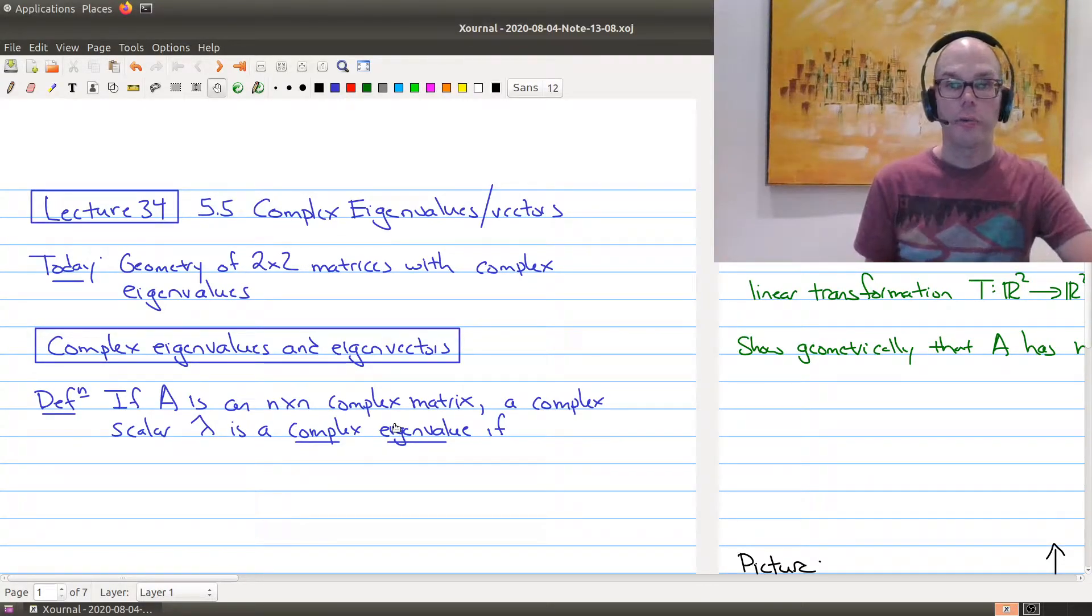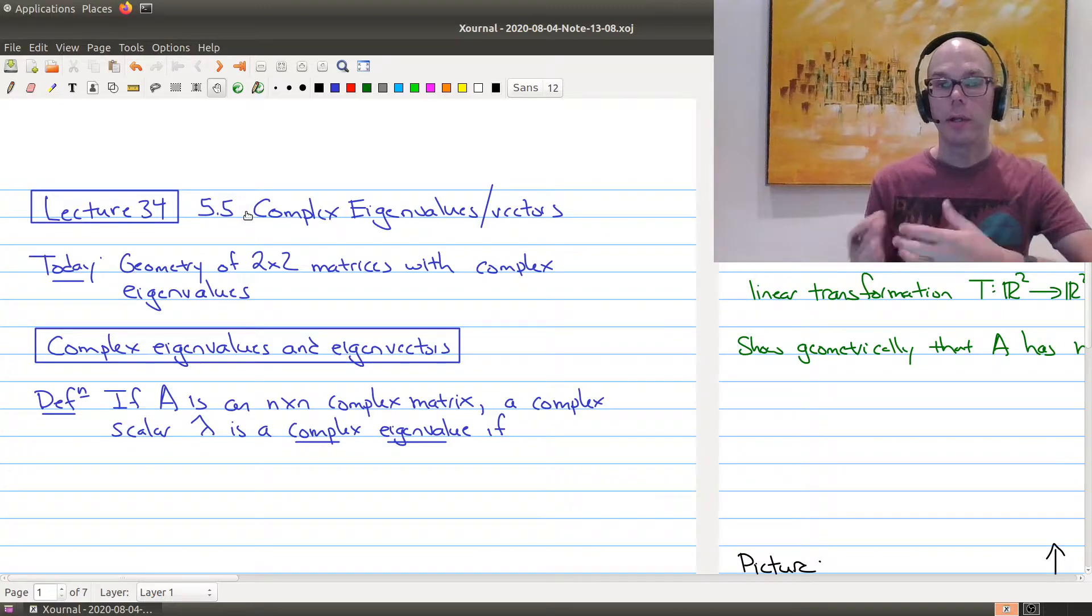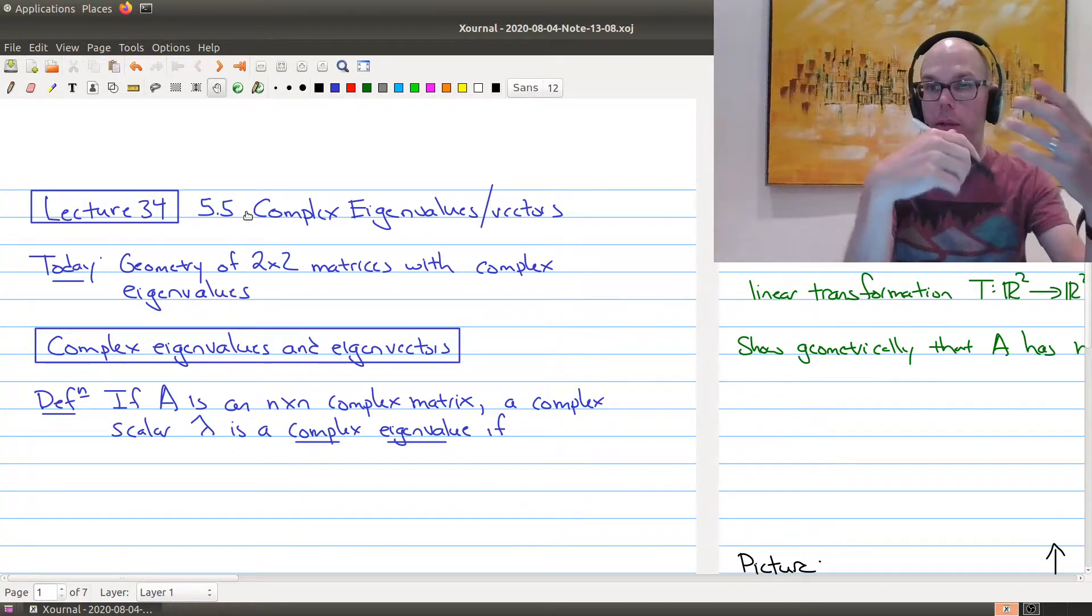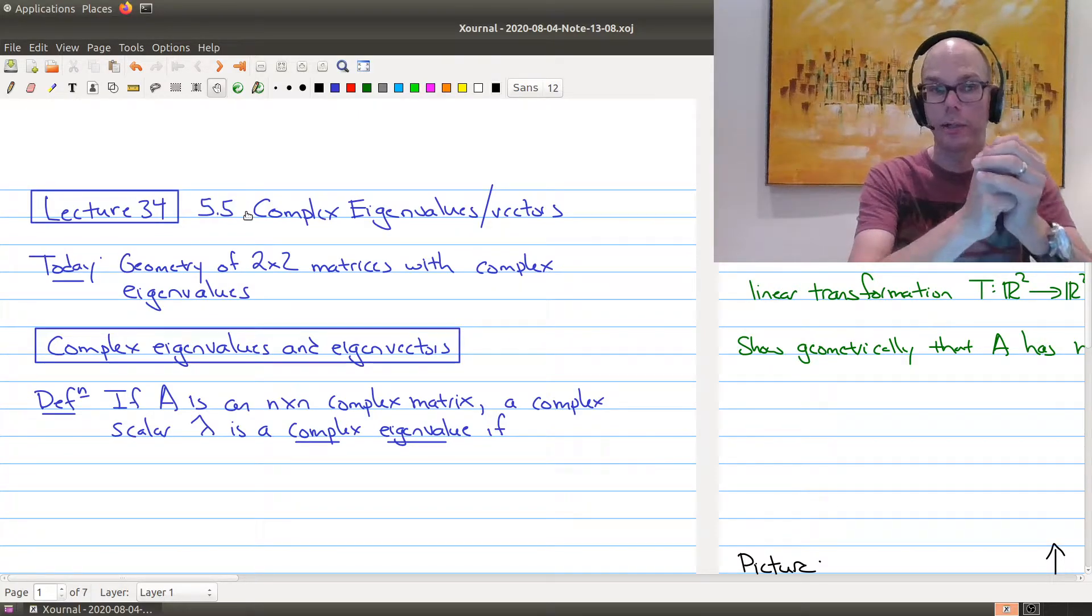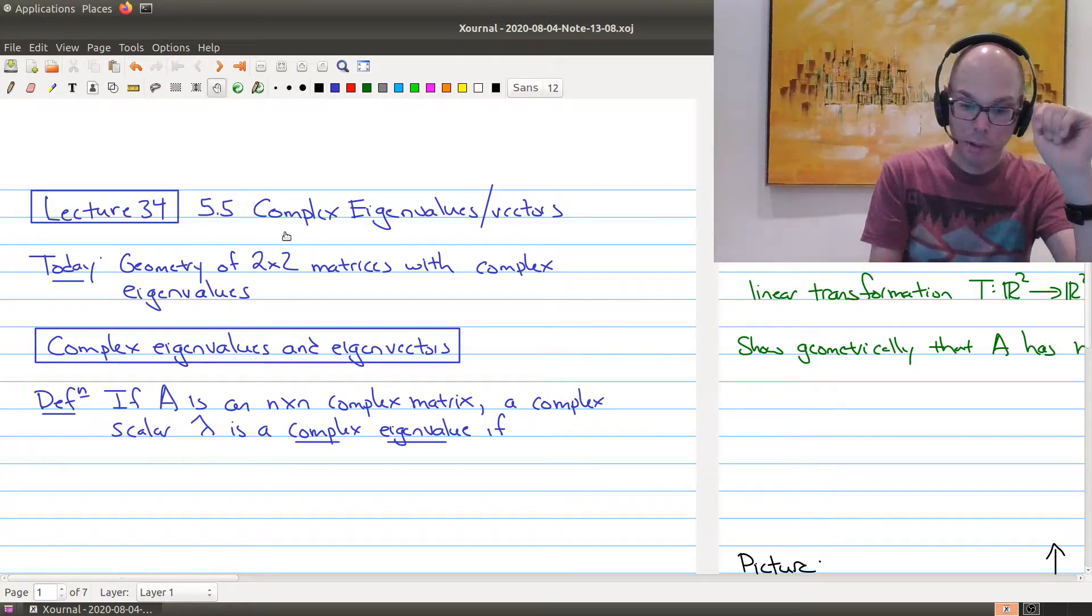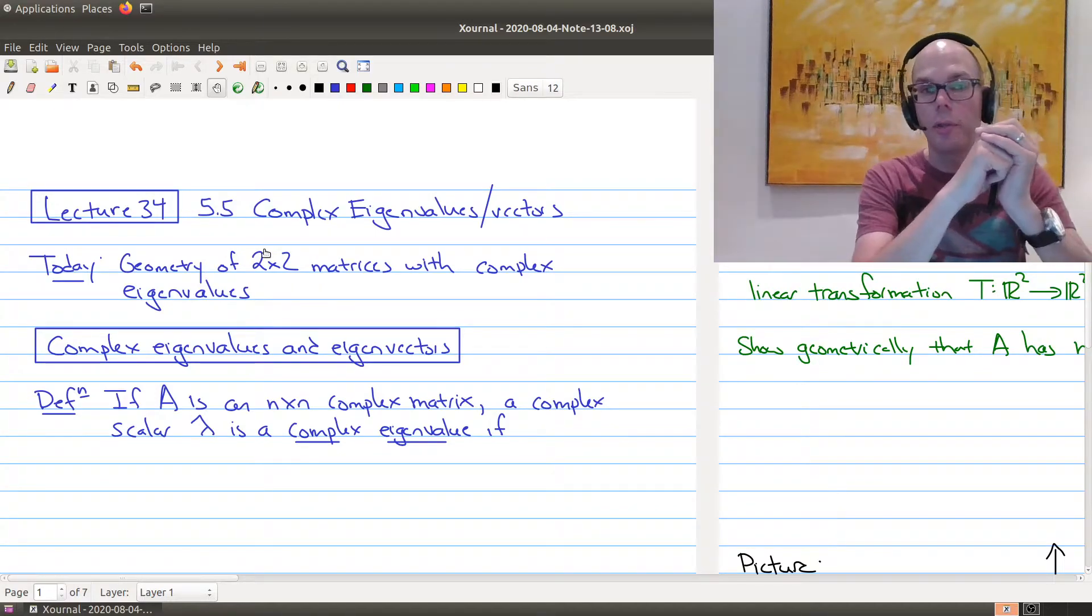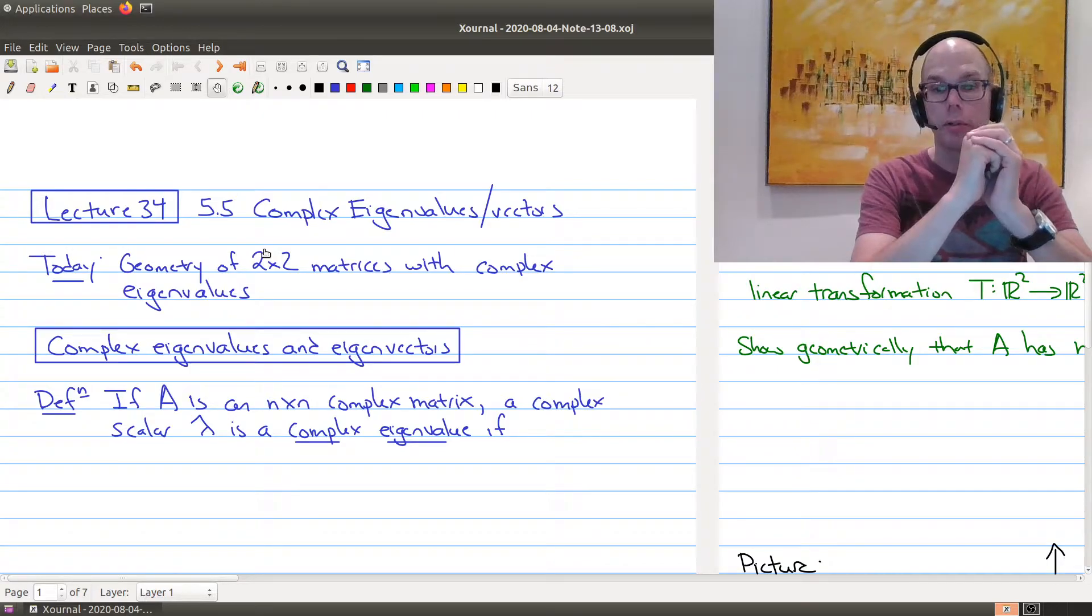Hello and welcome to Lecture 34 of Math 1B03. In today's lecture we're going to be looking at section 5.5 of the textbook, where we're going to be looking at complex eigenvalues and eigenvectors. Today's lecture directly builds upon Lecture 33, where we learned about complex numbers. We're going to actually focus specifically on the case of 2 by 2 matrices with complex eigenvalues.